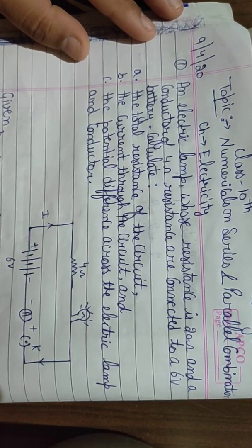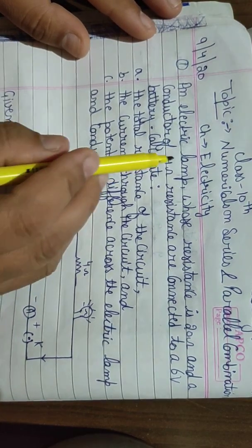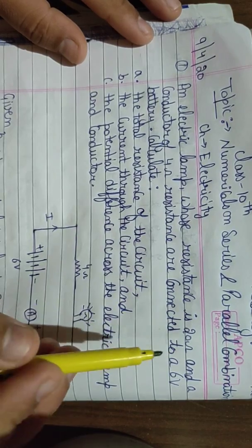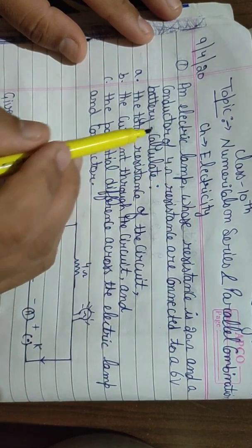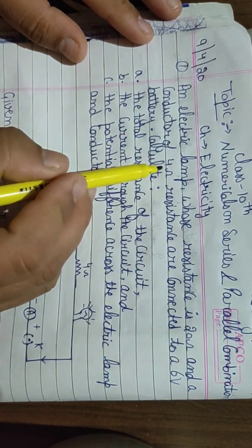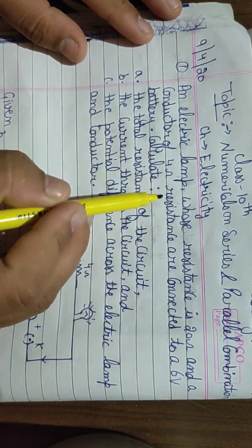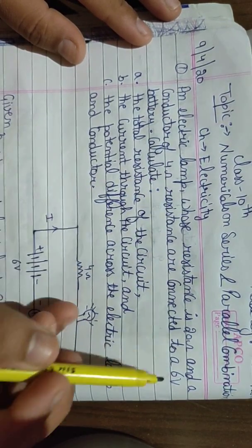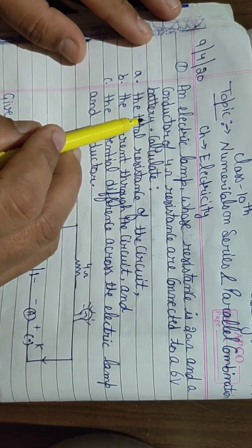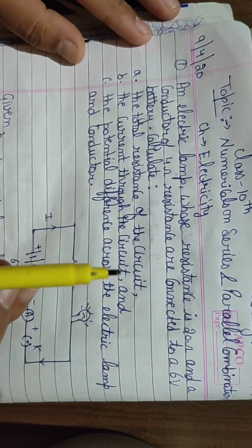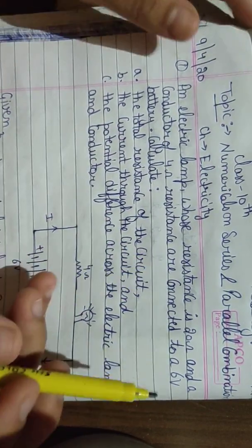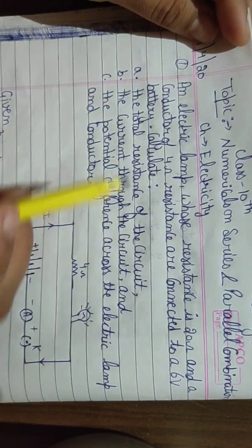So in this question, what is given? One electric lamp whose resistance is 20 ohm is given. The second appliance is a conductor whose resistance is 4 ohm. Both appliances are connected to a 6 volt battery, meaning the potential difference given is 6 volt. So from the given data, resistance is given and potential difference is given.